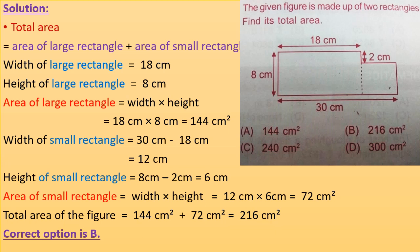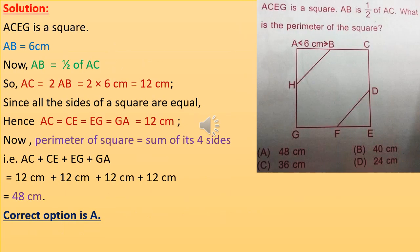Area of the small rectangle equals width times height equals 12 cm times 6 cm equals 72 cm squared. So the total area of the figure is 144 cm squared plus 72 cm squared equals 216 cm squared. The correct option is B.